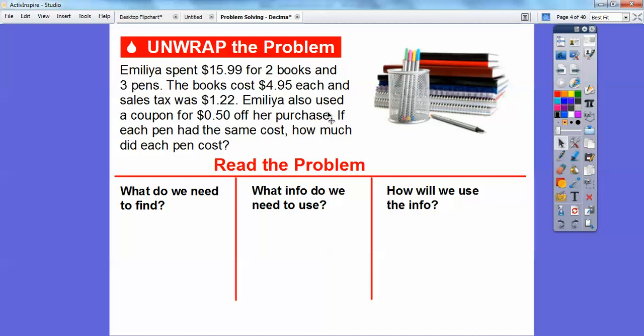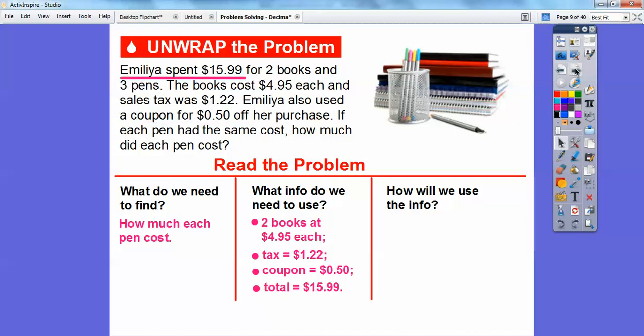So let's unravel that with a few questions. What do we need to find? Well, that's always this last little piece right here: how much each pen costs. Okay, so what info are we going to use? Well, there were two books, and each book was $4.95, so we'll multiply that times two, and the tax was $1.22, and then the coupon that we take off is $0.50, and all of that is going to total how much she spent, $15.99.